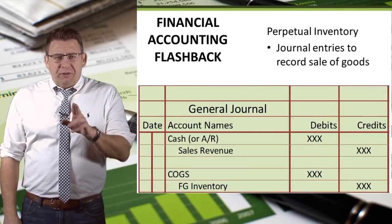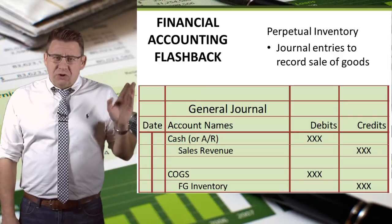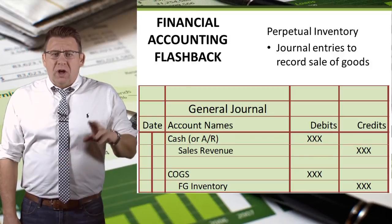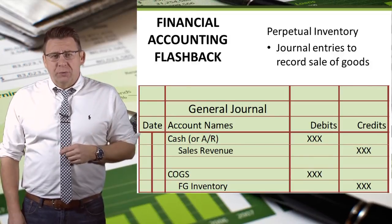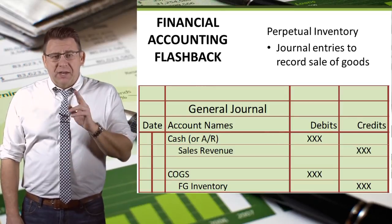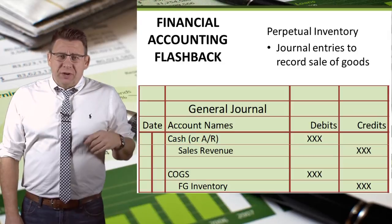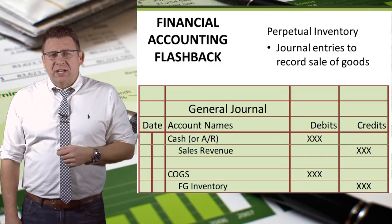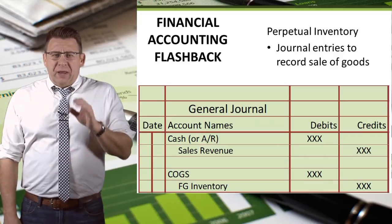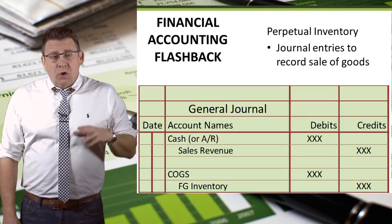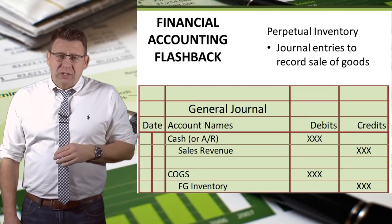Flashing back to financial accounting, here's the journal entry to record the sale of products assuming perpetual inventory. It requires two journal entries to record the sale of goods: we need to record a revenue entry and an expense entry. The revenue entry is a debit to cash, or possibly accounts receivable, and a credit to sales revenue. The expense entry is a debit to cost of goods sold and a credit to inventory, or in this case, finished goods inventory.